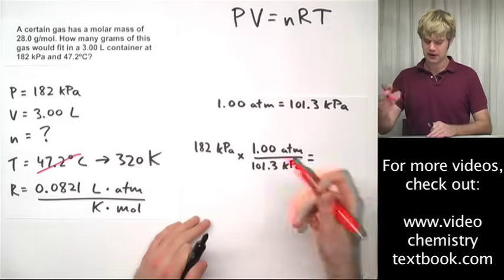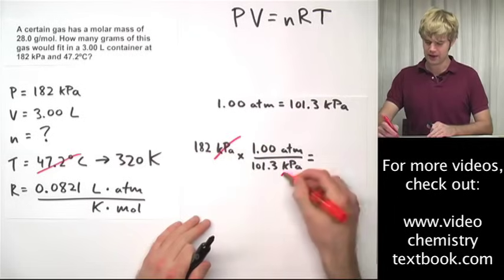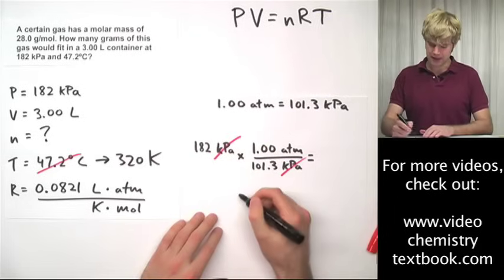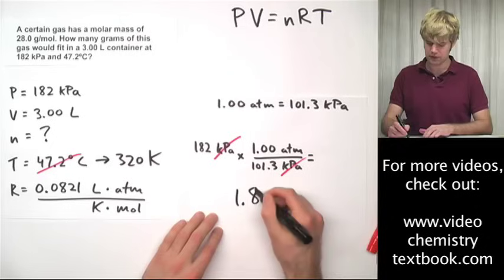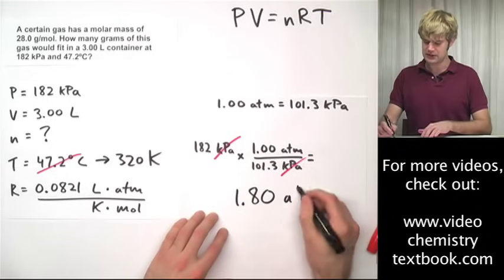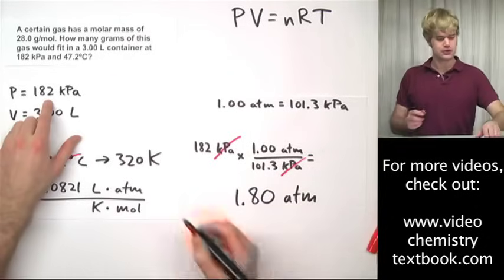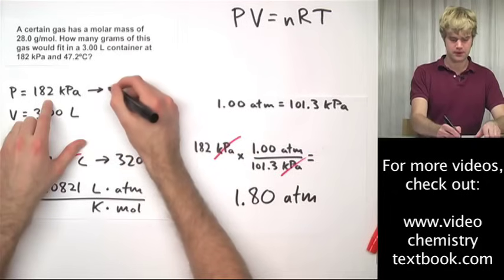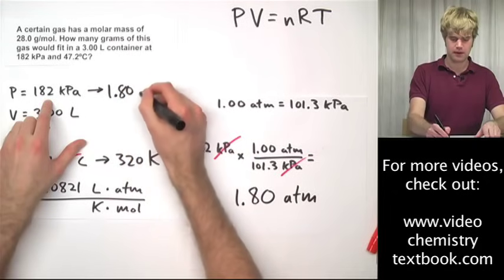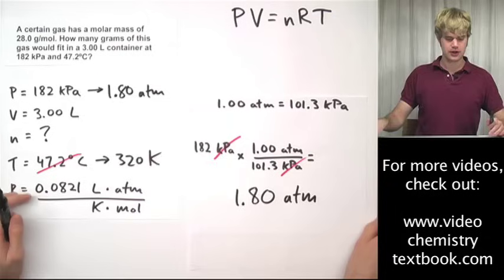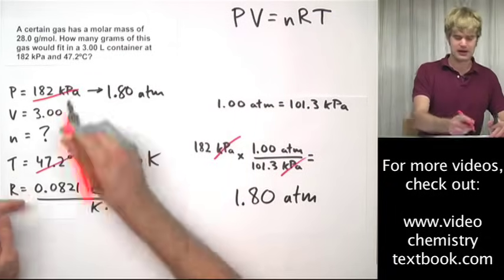One ATM is equal to 101.3 kPa. So I can do this math. kPa up here, kPa down there. They cancel out and I'm going to get rounded to three significant figures, 1.80 ATM. So this expressed in atmospheres is 1.80.